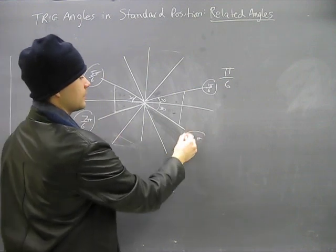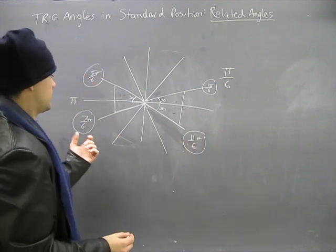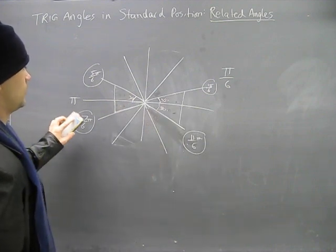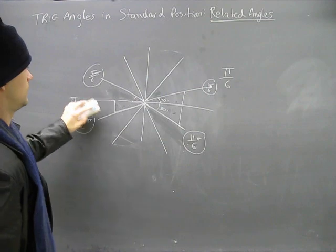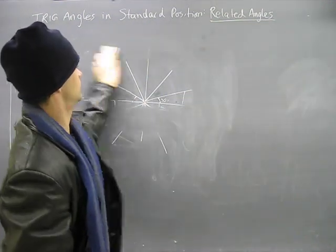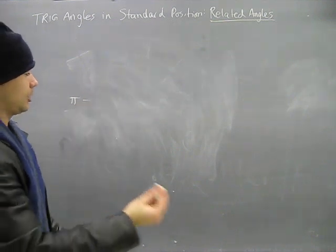Therefore, our four related angles here in radian measures are these four angles. What they've done is they've made four triangles. Similarly, we can look at using to help illustrate the point.